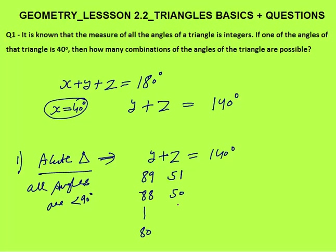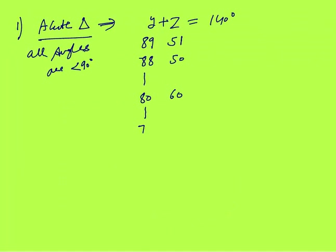Continuing: it could be 80 and 60, 65 and 75. Then 72 and 68, 71 and 69. Can we move further? 70 and 70 — yes, this is still an acute angle triangle because 70, 70, and 40 are all less than 90 degrees.